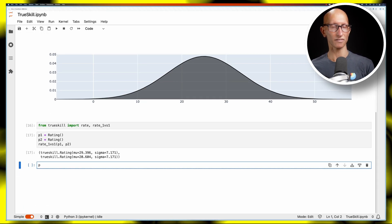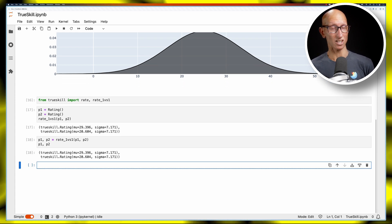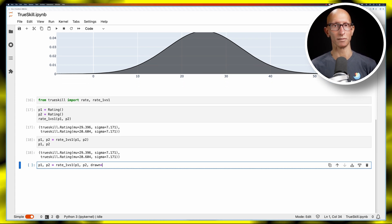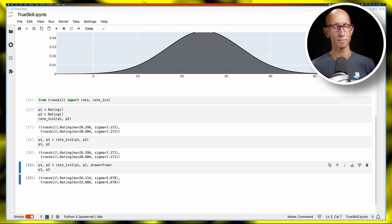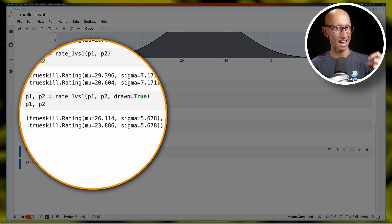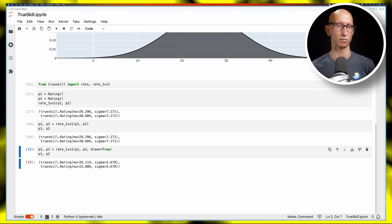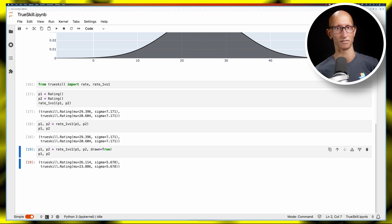Let's now do the same thing but we'll save the new ratings to p1 and p2. We can also have a draw or a tie between players by passing in drawn equals true, and then we'll get back and print out the p1 and p2 afterwards. You can see p1 has come down a little bit and p2 has gone up a little bit because we would have expected p1 to win since it had that higher rating after the first win.